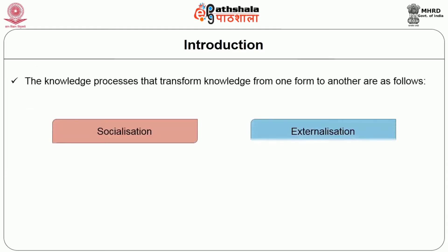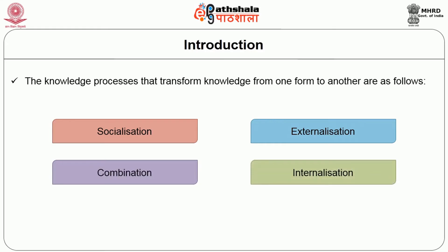The knowledge processes that transform knowledge from one form to another are: Socialization — from tacit to tacit, whereby an individual acquires knowledge directly from others through shared experience, observation, and imitation. Externalization — from tacit to explicit, through articulation of tacit knowledge into explicit concepts. Combination — from explicit to explicit, through systematization of concepts drawing on different bodies of explicit knowledge. And finally, Internalization — from explicit to tacit knowledge, through a process of learning by doing and through verbalization and documentation of experiences.